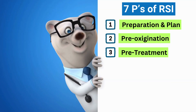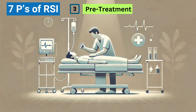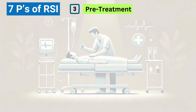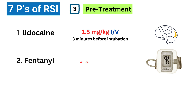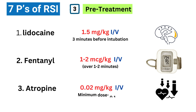The third P is pre-treatment. This is where we give medications to try and prevent some of the side effects that can happen during intubation. Some common ones include lidocaine, which can help prevent increases in pressure inside the skull; fentanyl, which can help prevent spikes in blood pressure and heart rate; and sometimes atropine, especially in kids, to prevent their heart rate from slowing down too much. The specific medications we use can vary depending on the patient and the situation.